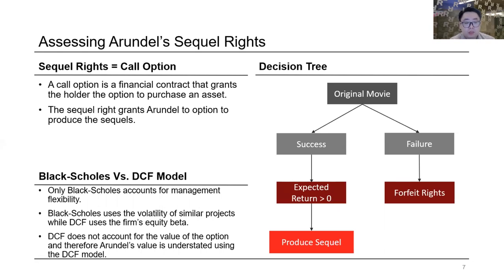Why use Black-Scholes in addition to DCF? Because only Black-Scholes accounts for management flexibility — if the original is not successful, Arundel's management has the flexibility to not produce a sequel, cutting further negative cash flows, which DCF doesn't capture. Also, Black-Scholes uses the volatility of similar projects. We used the standard deviations of returns of expected sequels produced in 1989 by six major studios. The discount rate used in DCF uses the firm's equity beta, which might not appropriately reflect the risk profile of the project.